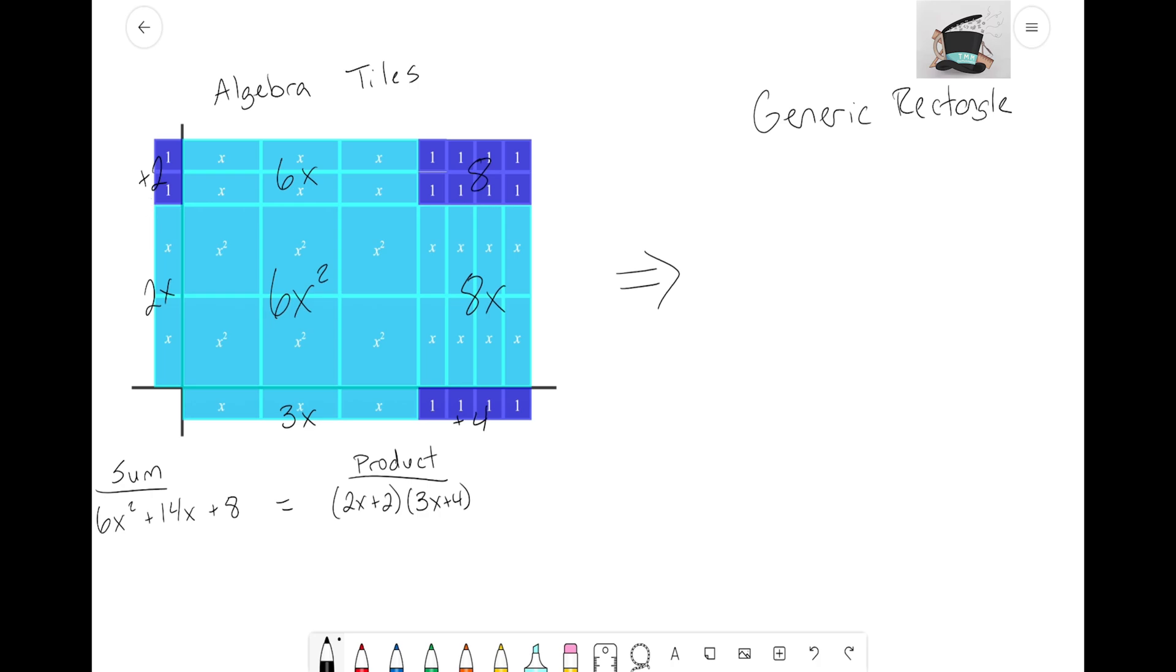Looking here with the generic rectangle, we always start off with a rectangle, pretty basic enough. Now looking back here on the side of my algebra tile construction, I see that I had a side of 2x plus 2. That is creating the left side of my generic rectangle. Now on the base we saw that our base was 3x plus 4. We're seeing that I'm just taking those dimensions from the algebra tiles and now I'm putting it on my generic rectangle here.